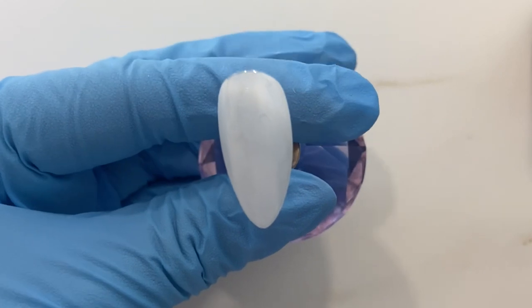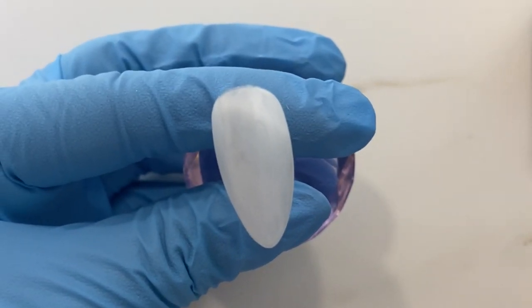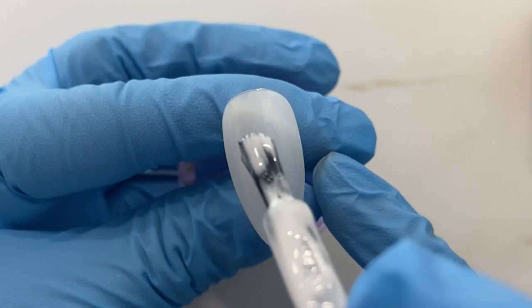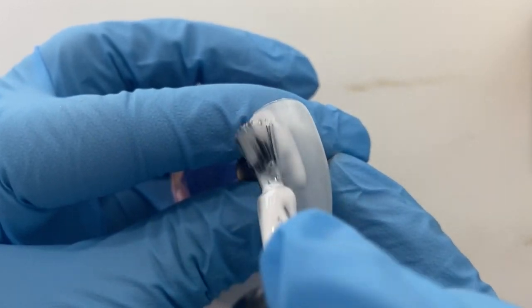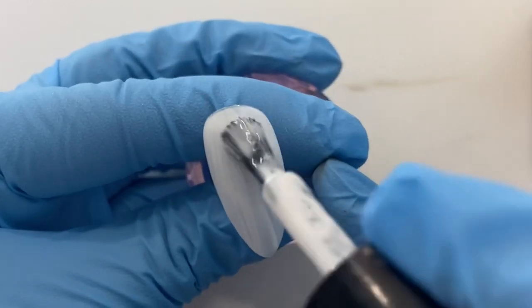Once our first coat is out of the lamp we need to paint a second coat. Using the same color again, Fresh as the Daisy, I'm going to paint my second coat of gel color on and then we're going to cure again for another 60 seconds.